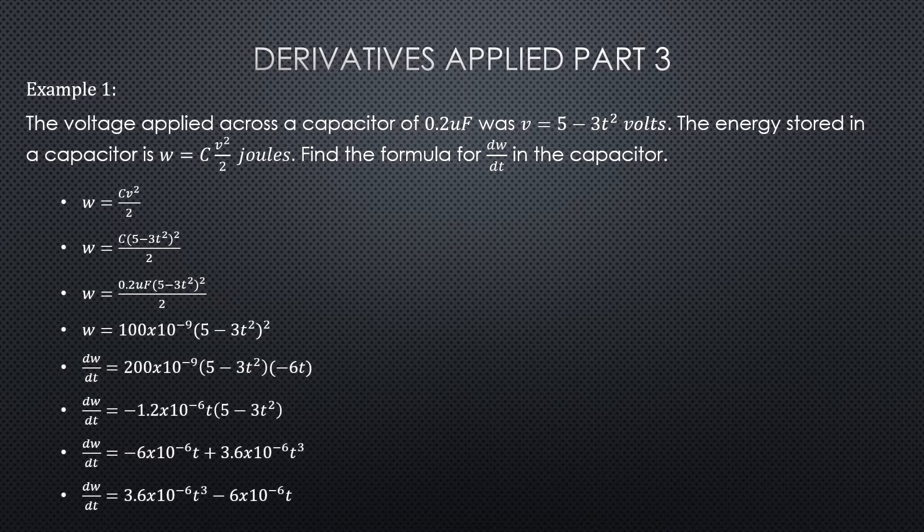So we've got the formula W equals CV² over 2, and we want to find dW/dt. The left side of the equation is fine, but the other side doesn't have the variable t. We need to get t in that side of the equation so that we can do dW/dt.